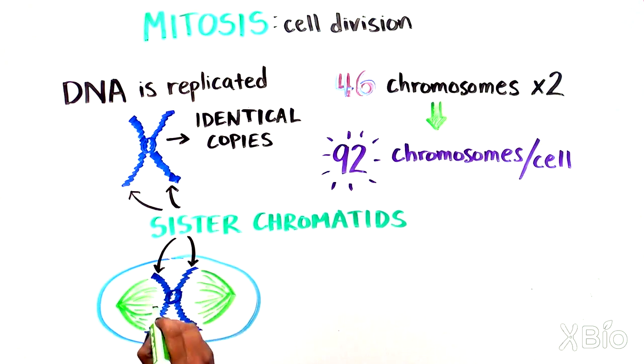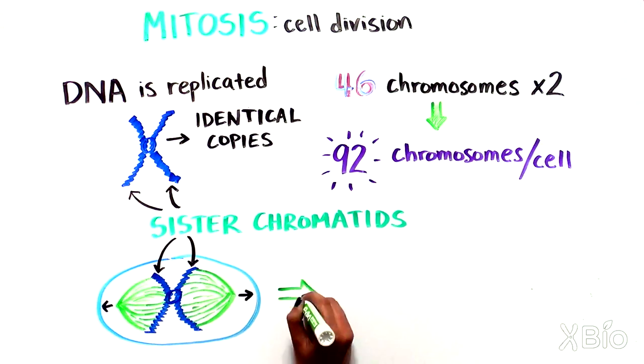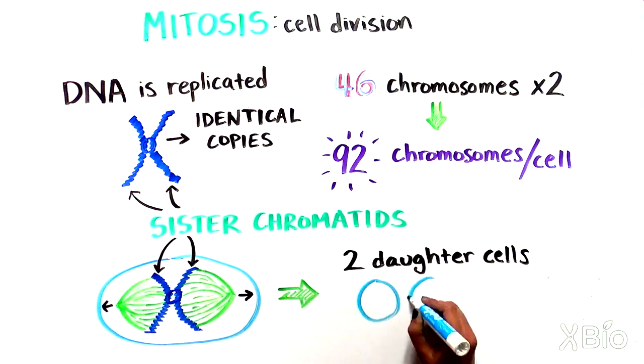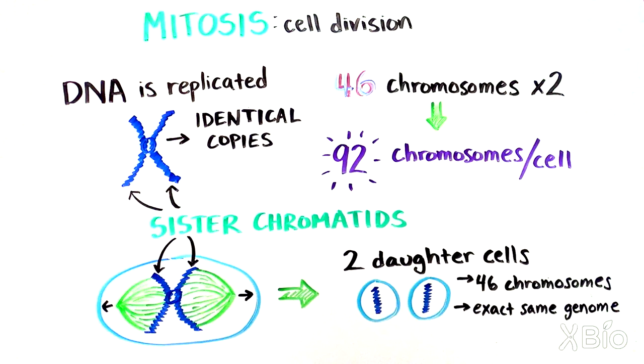At the end of mitosis, the two sister chromatids detach and are pulled apart in opposite directions. Two daughter cells are created, each with 46 chromosomes in the exact same genome.